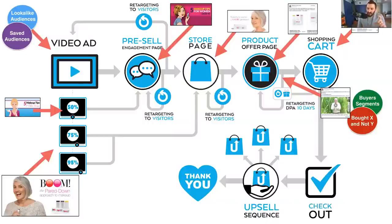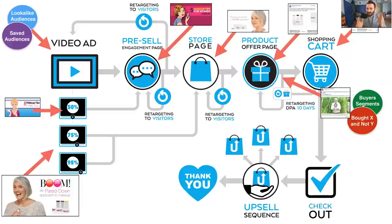We run a video advertisement to people who bought our top product but not our second product — or bought the second most popular but not the third. We create dynamic segments of people in our CRM who fit these criteria, send those segments to Facebook to create audiences, then run an advertisement saying 'would you be interested in this other product?' We spend about three grand a month on these ads and make about 45 — the ROI on Bot X but not Y advertising is insane.